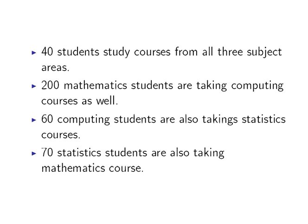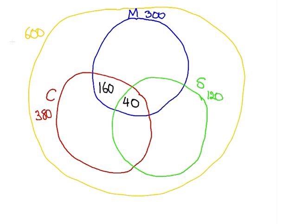60 Computing students are also taking Statistics courses. We have 60 students studying both Computing and Statistics, but we have already counted 40 of those who are additionally studying Mathematics. This means that 20 are studying Computing and Statistics subjects but not Mathematics subjects.